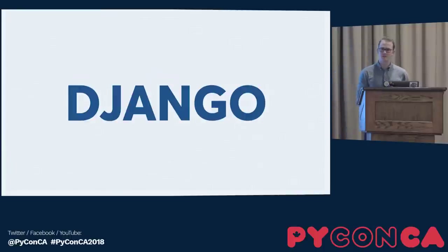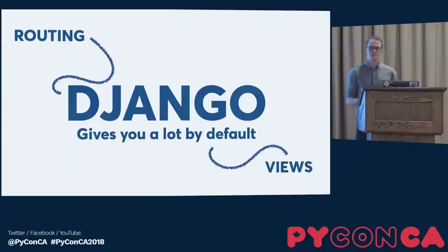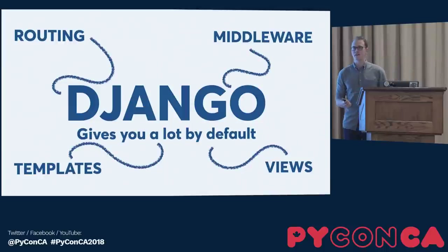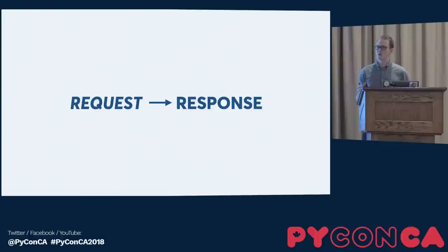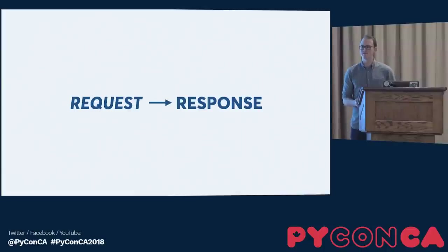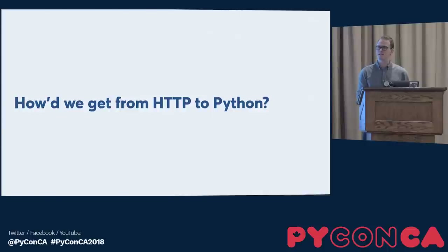I doubled down and learned Django really well. Coming out of school and starting web development, Django does a lot for you right out of the box: routing, views, middleware, templates, and many other things — well documented. What I liked most was its very simple request-response format. I would get a request and give back a response, and all the business logic lived inside that context. But at a certain point, you start thinking: how did I get HTTP into this Python view?